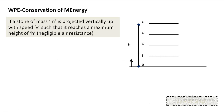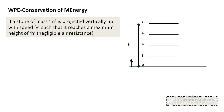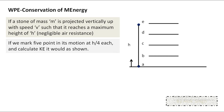Suppose a stone of mass M is projected vertically up with a speed v such that it reaches a maximum height h, where h equals v² by 2g. We are ignoring air resistance, considering the stone thrown in vacuum. After reaching the maximum height, it starts falling back and comes back to the starting point with the same speed.